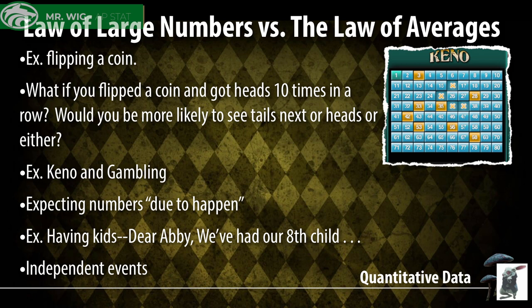We're going to talk about the law of large numbers, which is one of the biggest ideas in statistics. A lot of people want to imply the law of averages is something that it is not. If I flipped a coin and got heads 10 times in a row, people tend to feel like they are more likely to see tails show up. That is absolutely 100% false, assuming you have a fair coin. Every single time I flip that coin, it's like I've never flipped it before. We call these independent events — the event that previously happened will have no impact on what happens in future events.